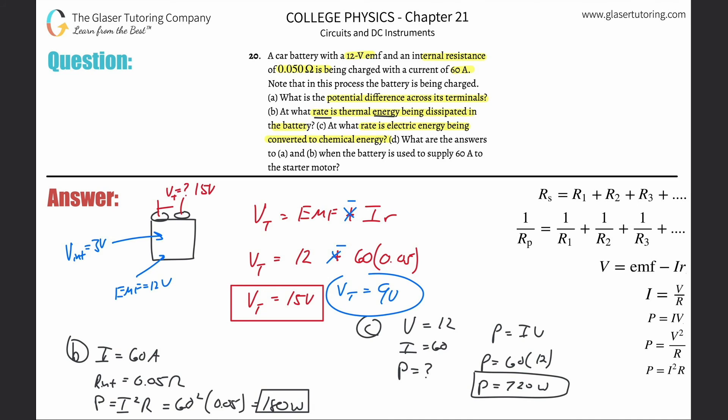And then it's saying B, what rate of thermal energy being dissipated in the battery? So that should be the same because we're still talking about the internal voltage. We're still talking about the same current. So that's going to be still 180 watts.